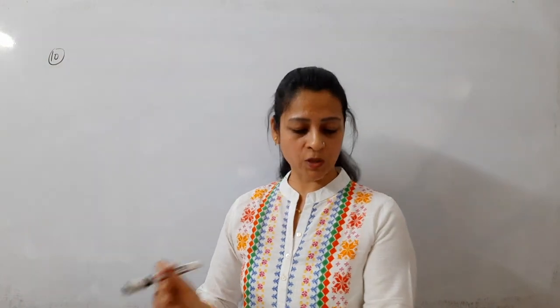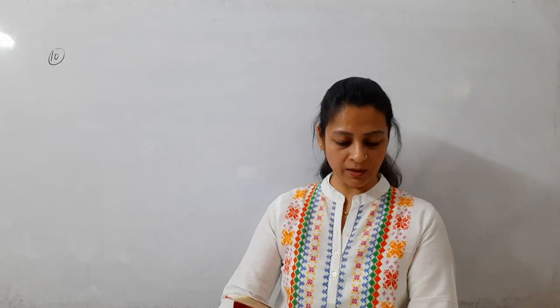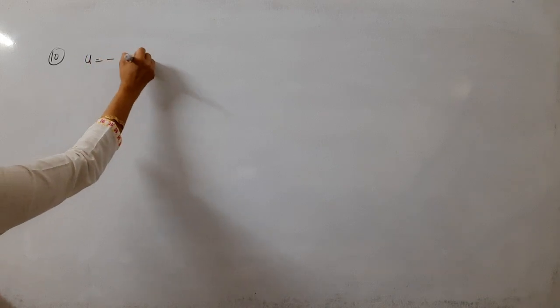Hello students, this is a question from chapter light back exercise question 12. An object is placed at a distance of 10 cm from a convex mirror.